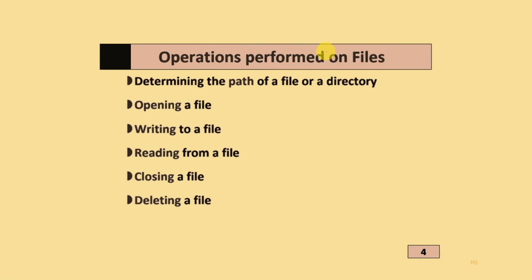Operations performed on files include: determining the path of a file or directory, opening a file, writing to a file, reading from a file, closing a file, and deleting a file.